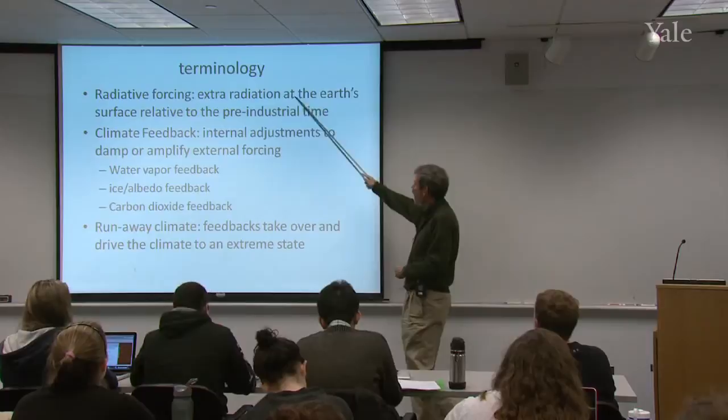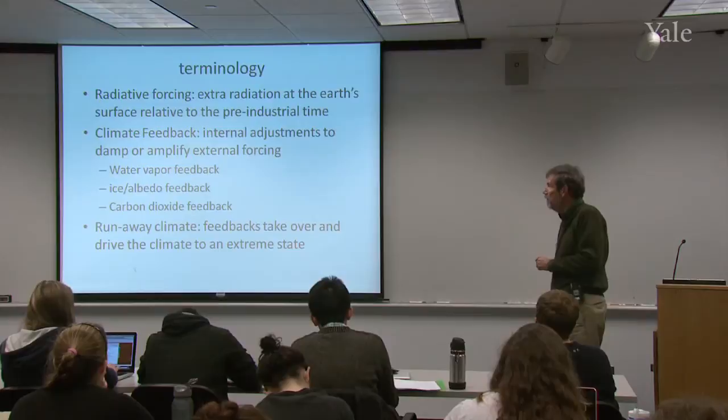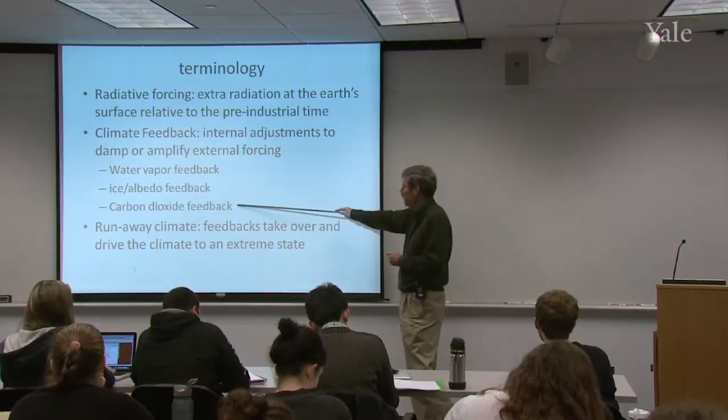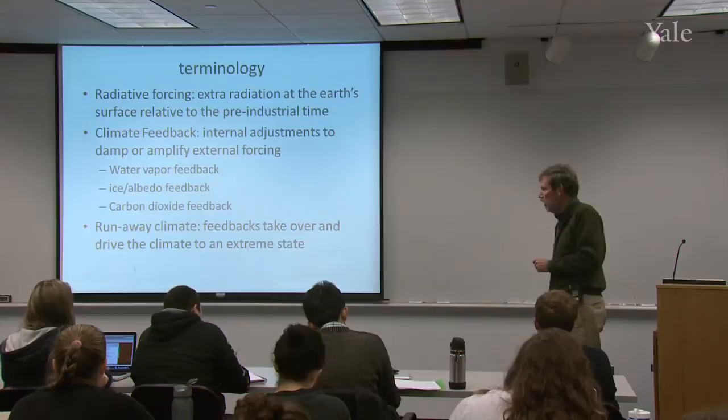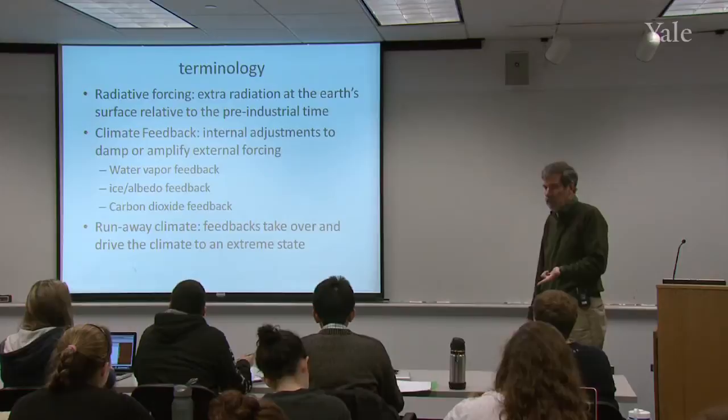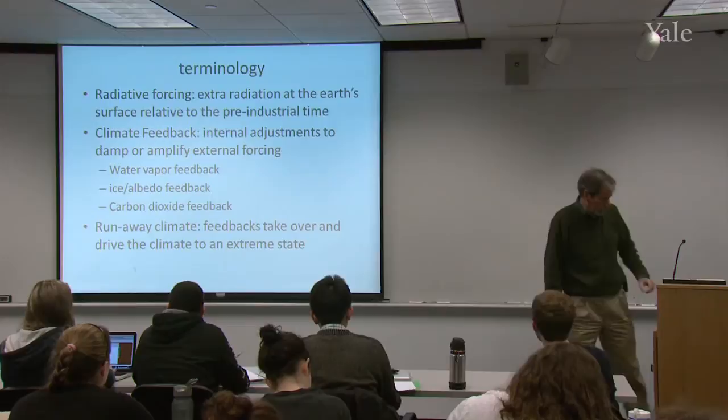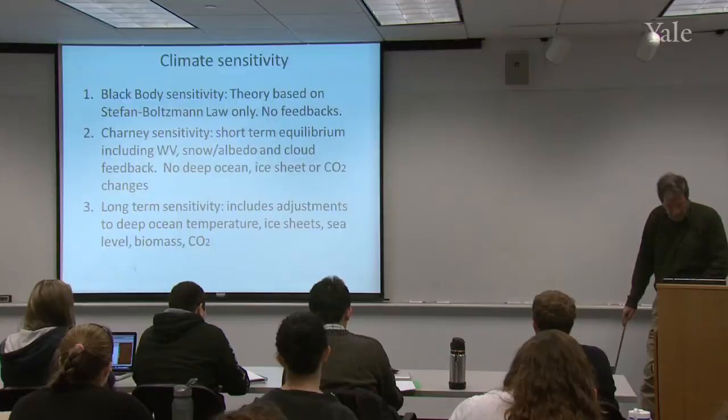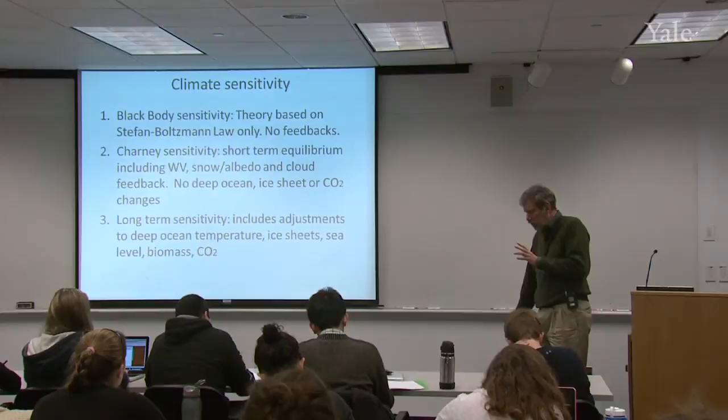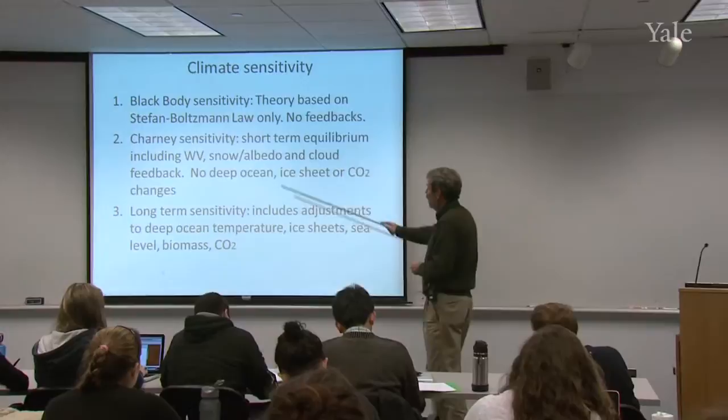So the definitions of radiative forcing, extra radiation at the Earth's surface relative to pre-industrial times. That's the way radiative forcing is defined in the global warming debate. I wouldn't call that a universal definition, but in the global warming debate, that's how it's defined. These are the primary feedbacks we're talking about. And occasionally, you'll find the discussion of a runaway climate, where the positive feedbacks are so strong that they would take over and drive the climate to an extreme state, like has happened on Venus. Unlikely for Earth, but it's part of the conversation. So let's, I've got to define, OK. Now, there's another variable that comes in in how you define climate sensitivity. And that has to do with what feedbacks do you include in the calculation.